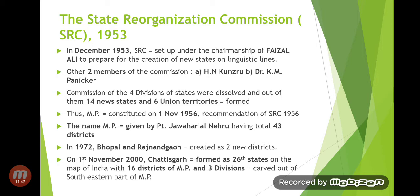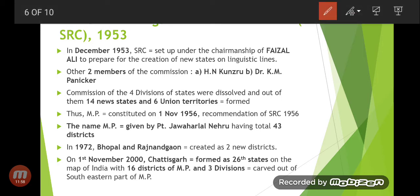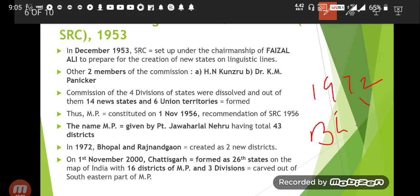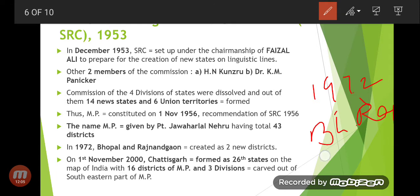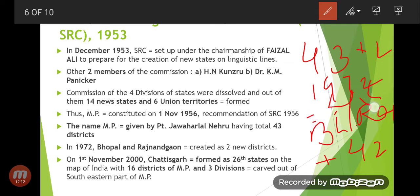In 1972, Bhopal and Rajnandgaon were created as two new districts. So the original 43 districts plus these 2 new ones brought the total number of districts to 45.